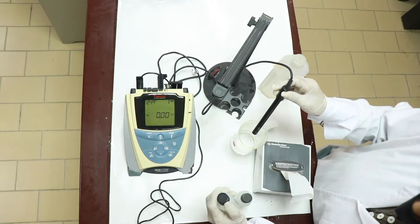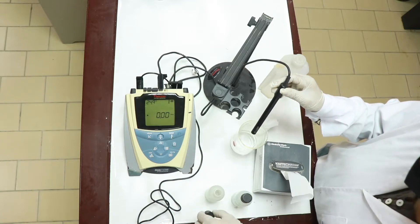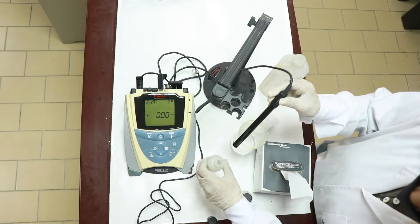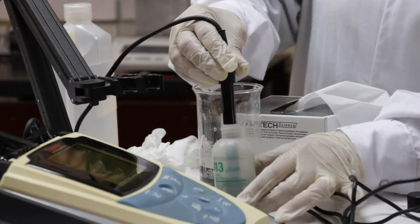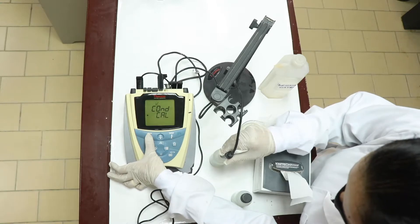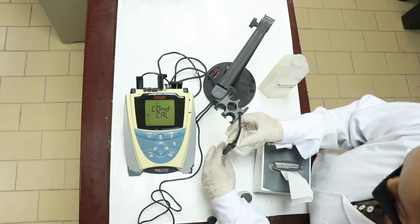Open the 1413 bottle. This solution's conductivity we already know. Now, dip this glass electrode into the solution and you have to press calibrate. Look at the screen. What is appearing? Conditional calibration.